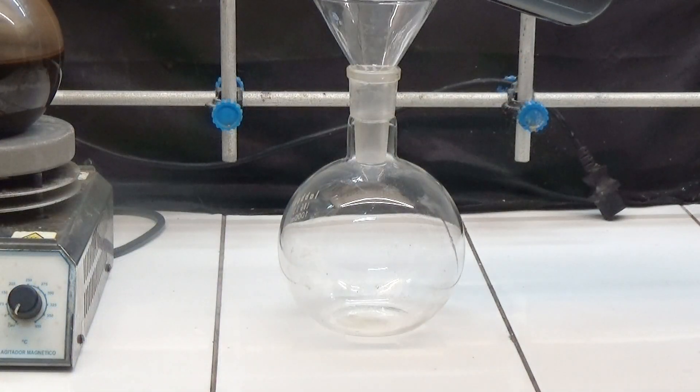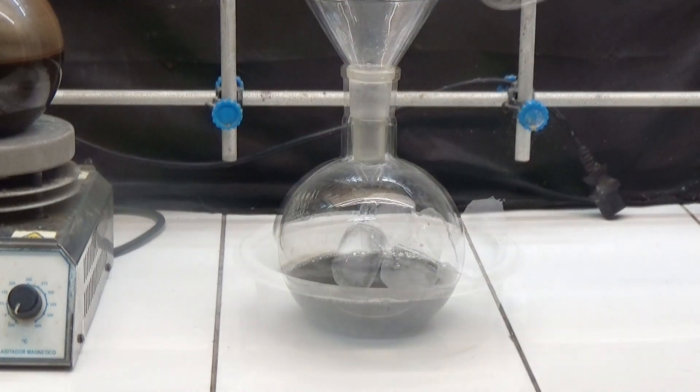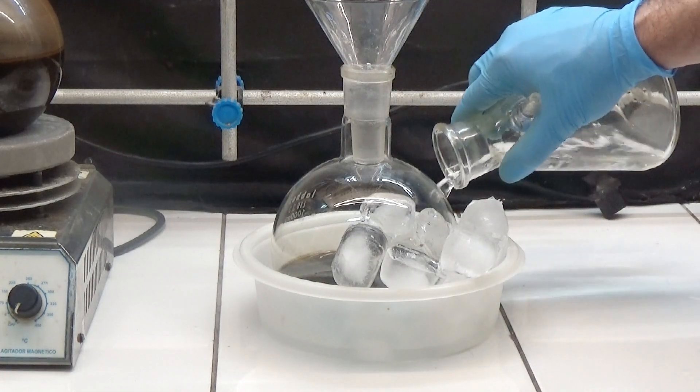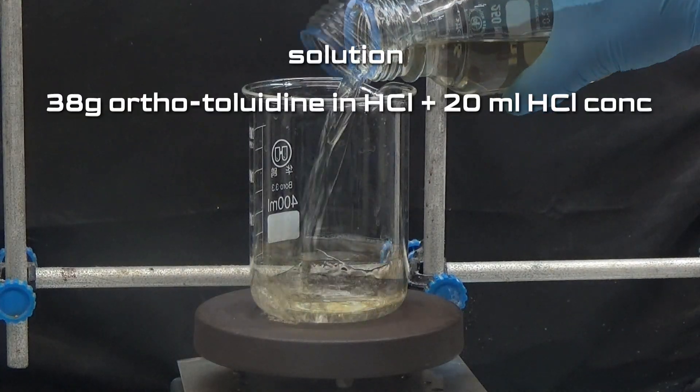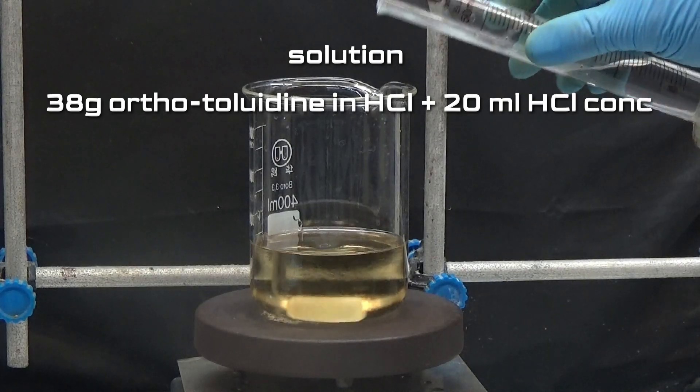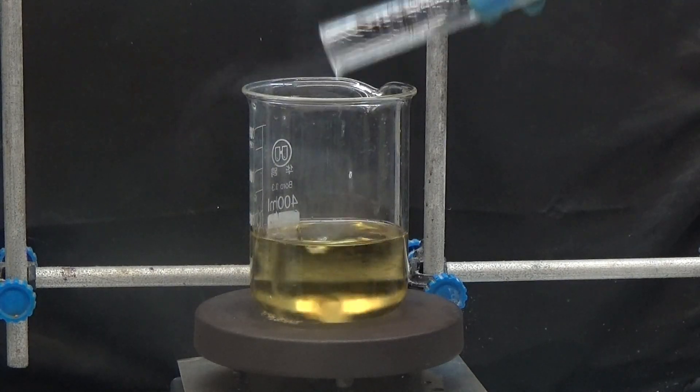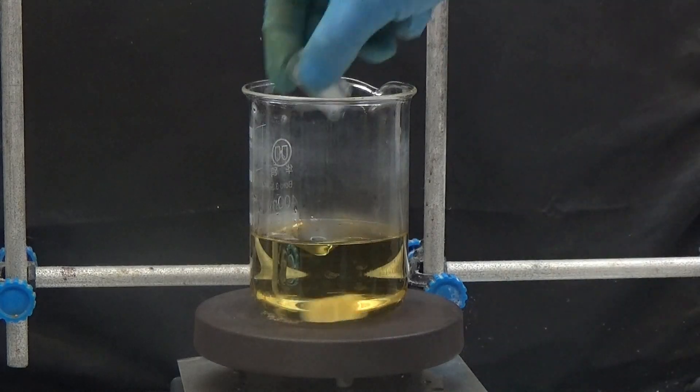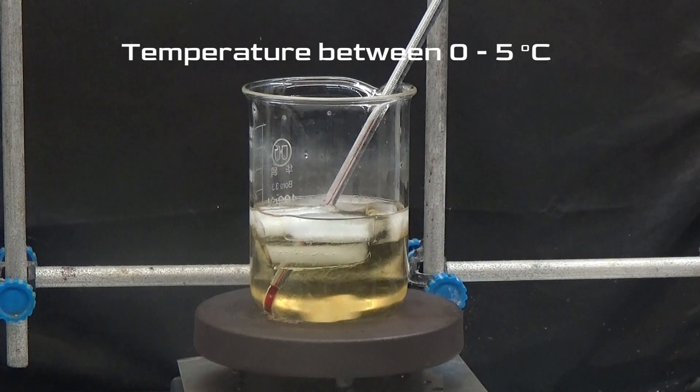We put this solution in a 1000 milliliters flask and cool it with an ice bath. The obtained solution of orthotoluidine hydrochloride from the reduction is put into a 500 milliliters beaker and 20 milliliters of concentrated hydrochloric acid is added. Add ice to the solution to cool the solution to a temperature between 0 and 5 degrees.